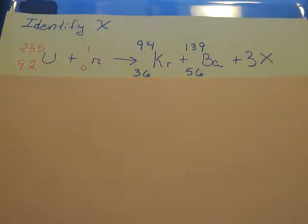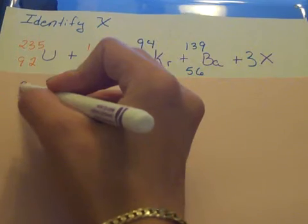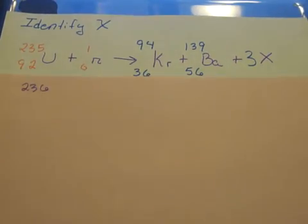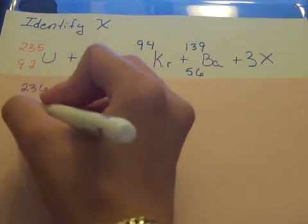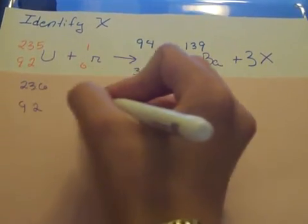On this side to our left we see that we have 235 on top and a 1, so that would be 236. And then on the bottom we have a 92 and 0, so we have a total value of 92. That's for this side.